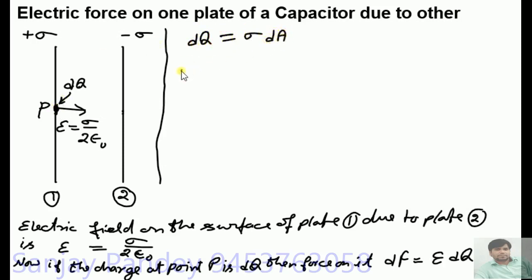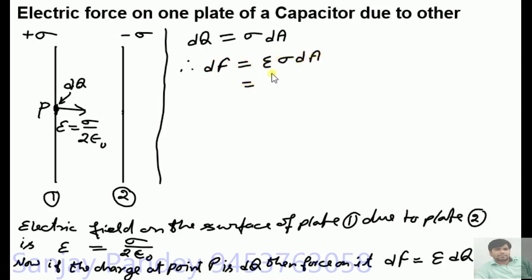Therefore, the value of dF will be dF = E · σ dA. As E = σ / (2ε₀), so dF = (σ / 2ε₀) · σ · dA.